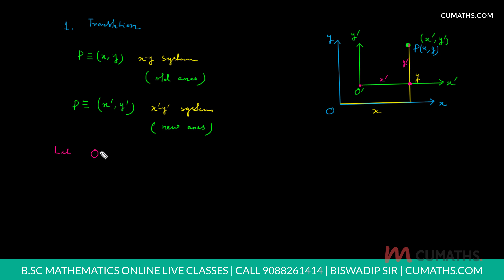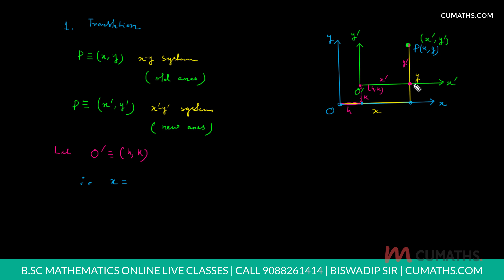Suppose the new origin O dash has coordinate (h, k) with respect to the old system. So this distance is h and this distance is k. We observe that x means the distance from origin O to that point along x. x dash is the distance from O dash to that point along x dash. So x equals x dash plus h. Similarly for the y height: the total height is y, the new height from O dash is y dash, and the height of O dash is k. So y equals y dash plus k.